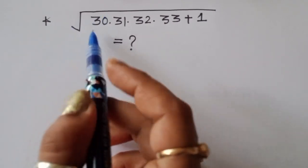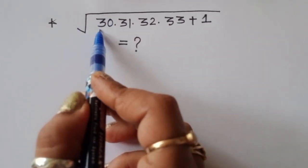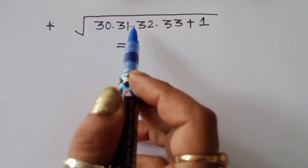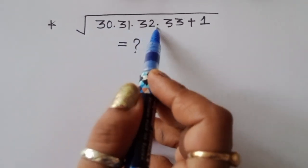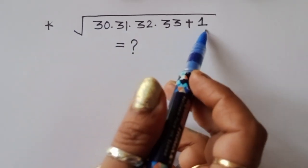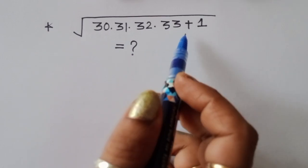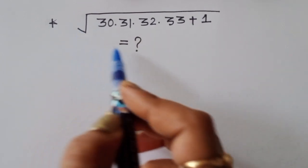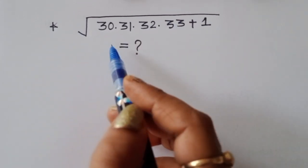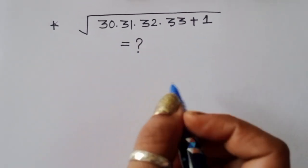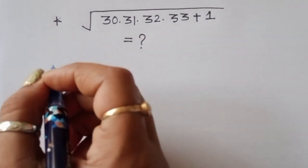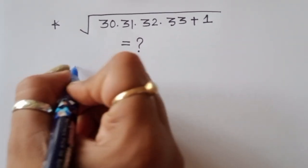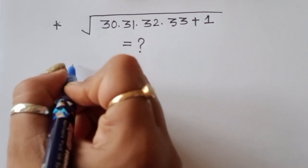The question is: given square root of 30 times 31 times 32 times 33 plus 1, what is the value? We have to find out the value of this term. It's a very easy solution, so let's start.